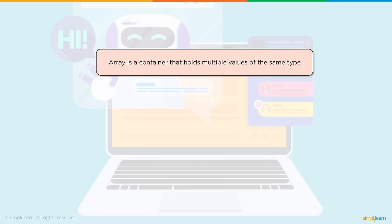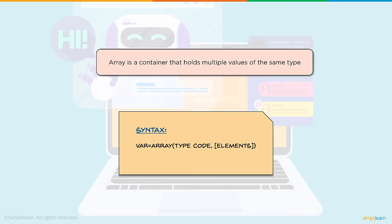Array in Python. An array is a container that holds multiple values of the same type — and this is very key: the array has to be of the same type. The syntax for developing your basic array is your variable name, whatever you want to call it, equals array, your type code, and then the elements in the array.